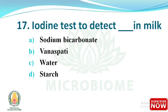Next question: the iodine test is used to detect adulteration in milk. Options: (A) sodium bicarbonate, (B) vanaspati, (C) water, (D) starch. The right answer is option D, starch.